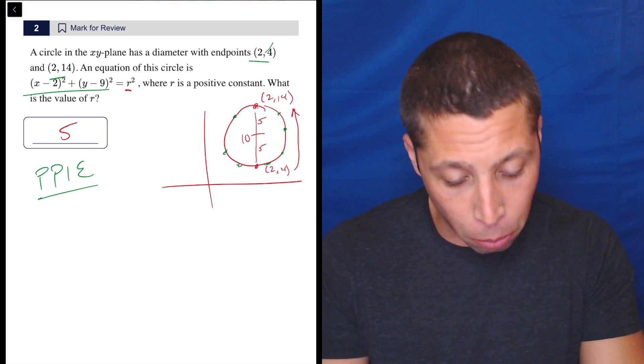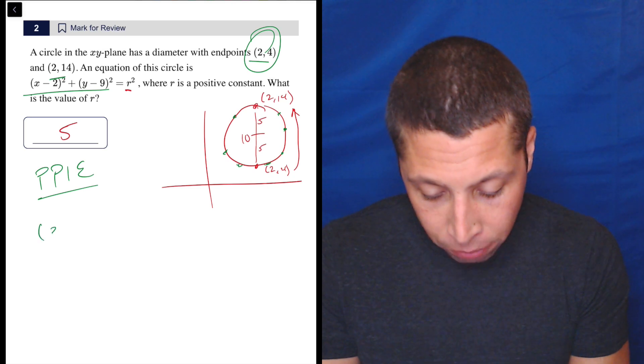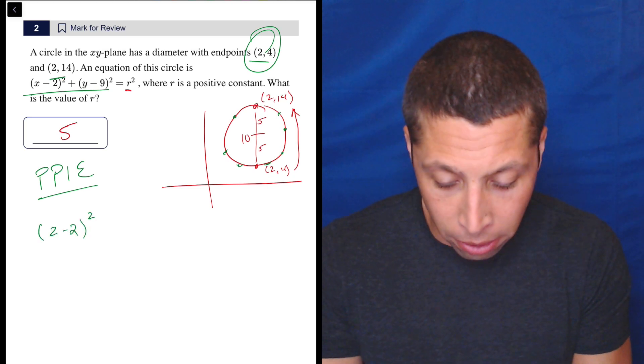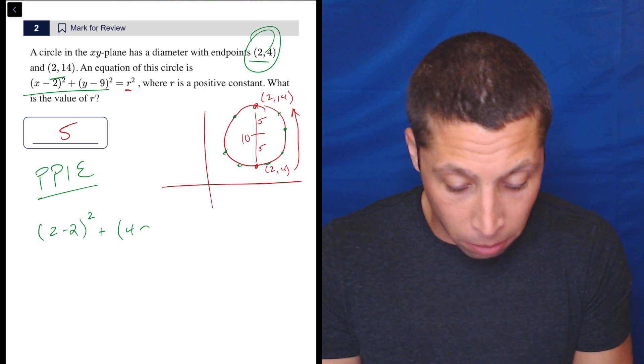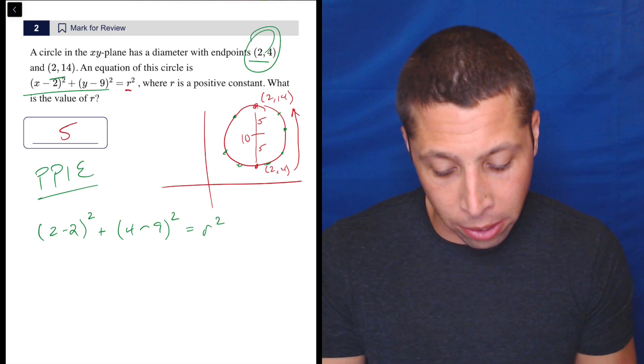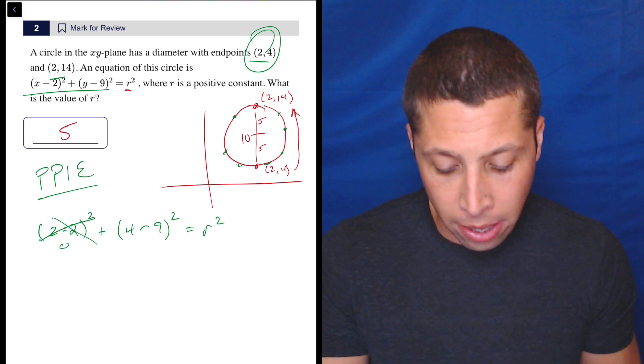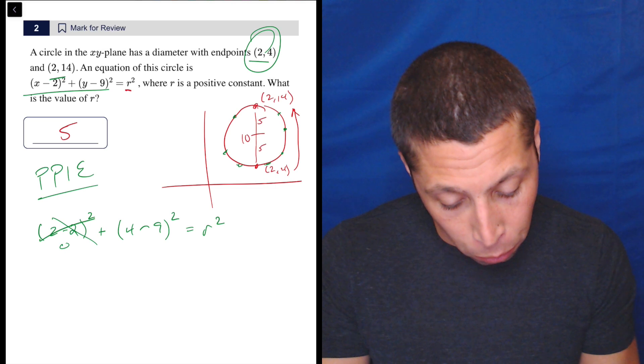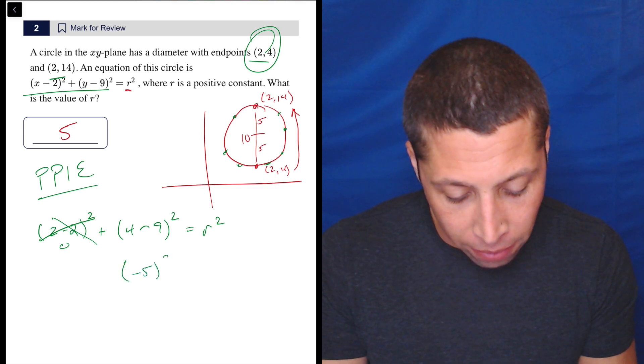So let's just plug in the simpler point, 2, 4. So we're going to have (2 - 2)² plus (4 - 9)² equals R². So 2 minus 2 squared is zero. So this whole thing goes away. So there we go. And 4 minus 9 is negative 5 squared.